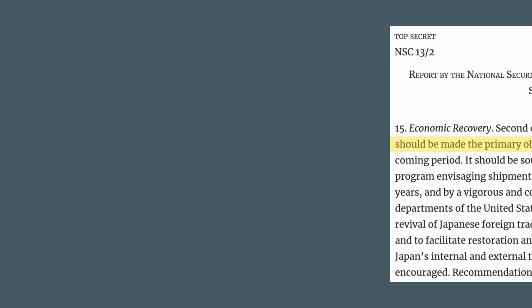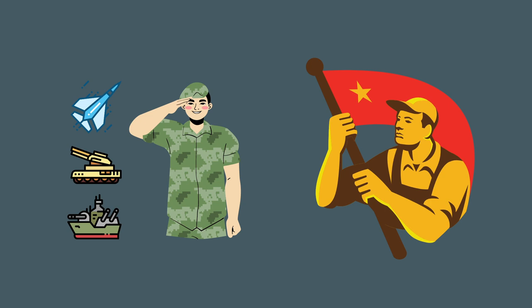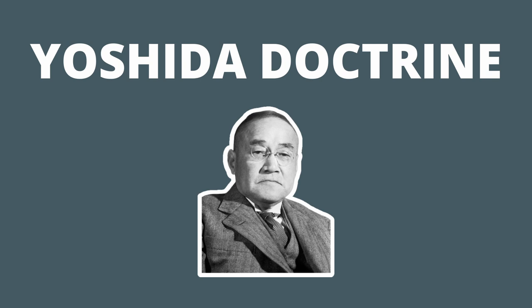Speaking of communism, America also wanted Japan to create a military force to defend their own territory from communist Russia and China. In response to America, Yoshida says no. Yoshida's pushback and negotiation with America creates the Yoshida Doctrine. There are three pillars to this doctrine.